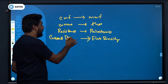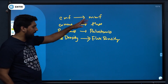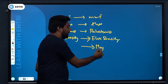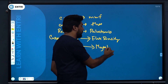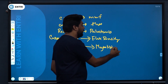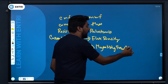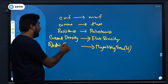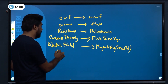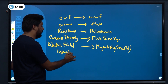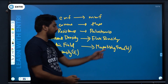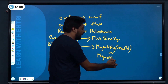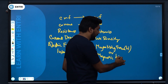Magnetizing force H is the magnetic field intensity, analogous to electric field intensity E. So H is the magnetizing force and is also called magnetic field intensity — these are two names for the same quantity.